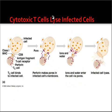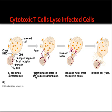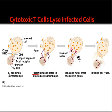Another way cytotoxic T cells lyse infected cells: when a cytotoxic T cell attaches to an infected cell through class 1 MHC molecules, it releases certain proteins known as perforins. These perforins generate pores in the infected cell membrane. Because of these pores, the membrane becomes highly permeable, allowing ions and water to enter the cell through the pores, further leading to the lysis of the infected cell.